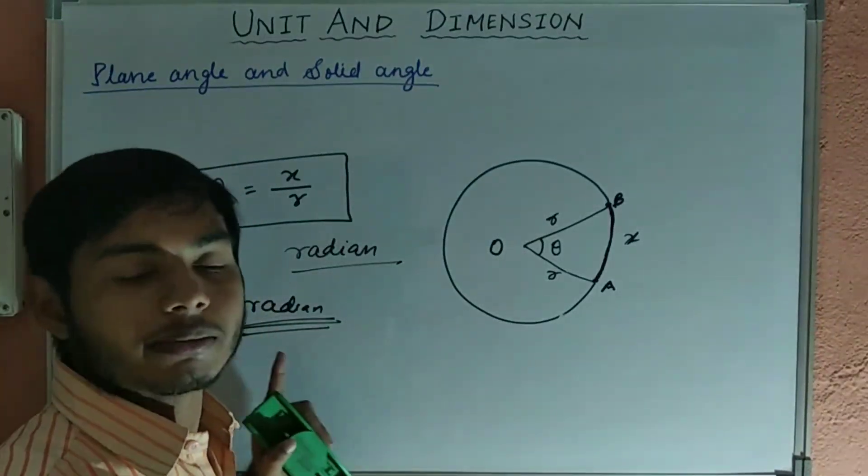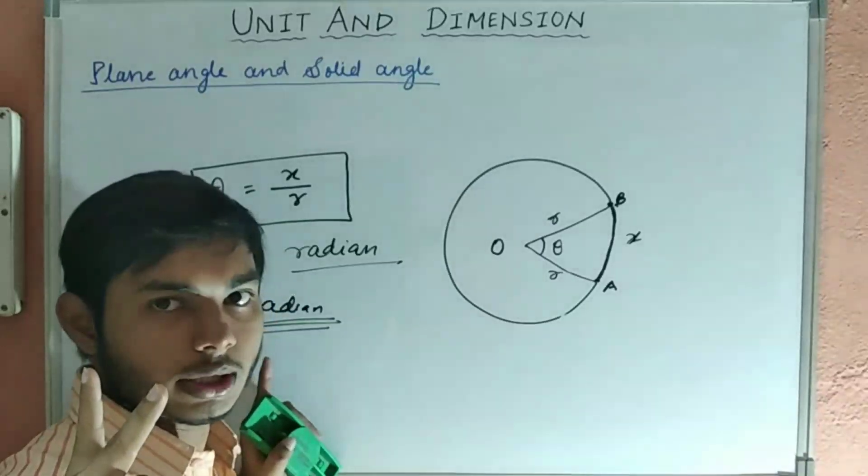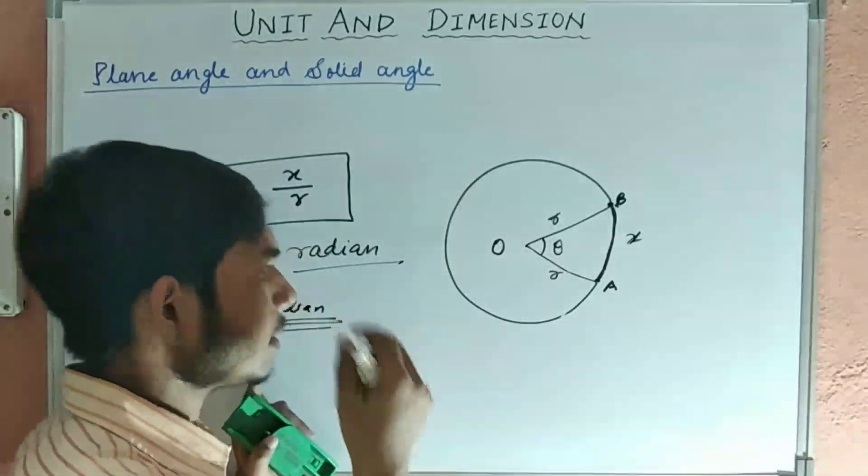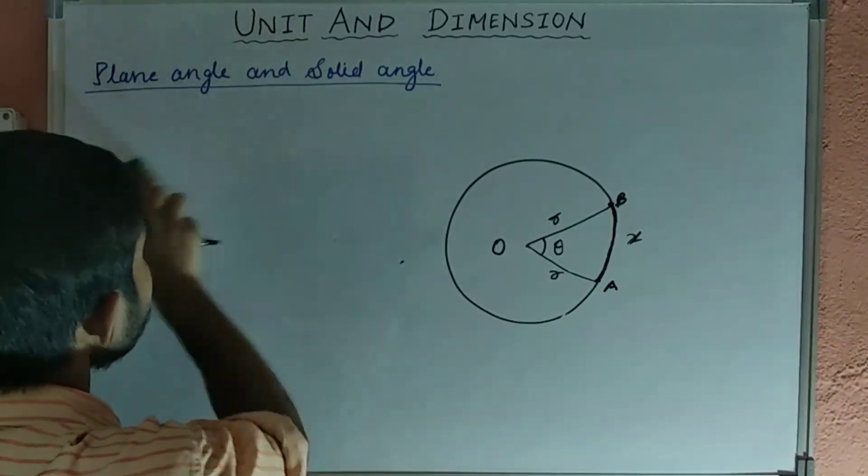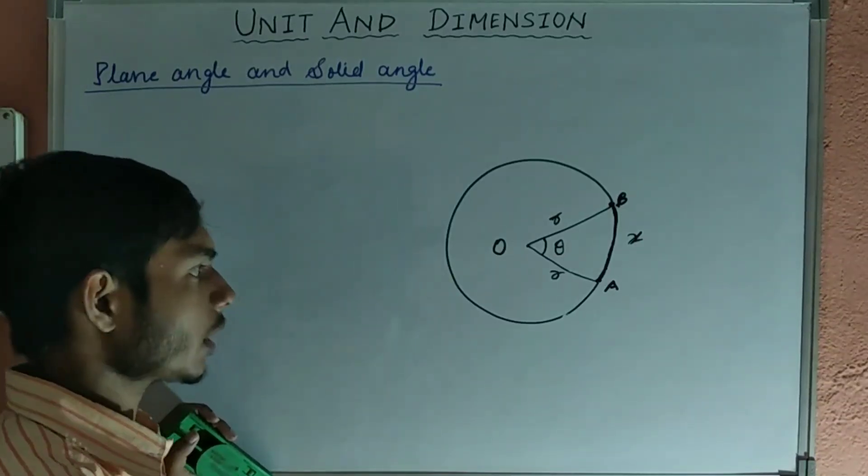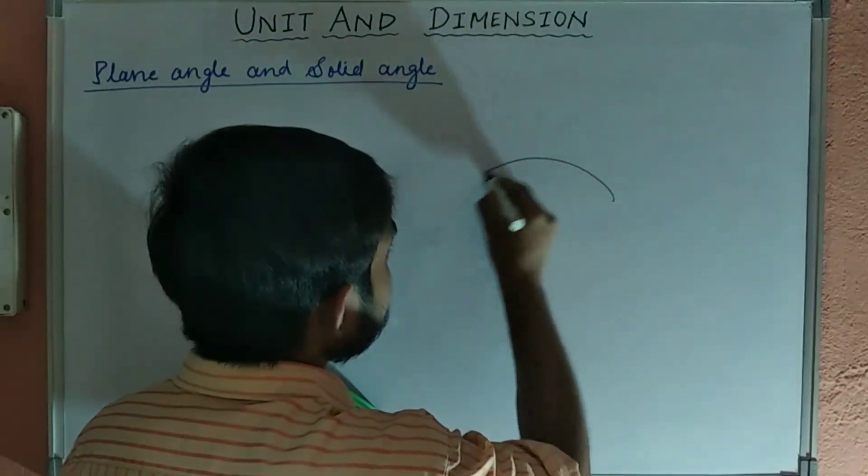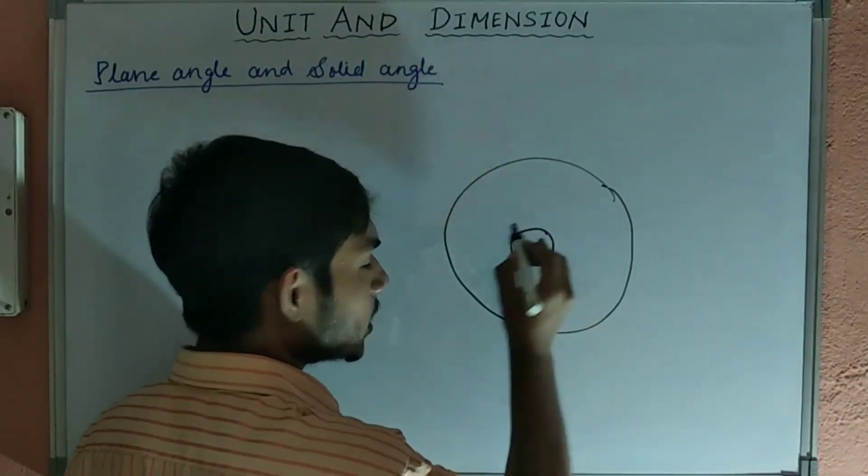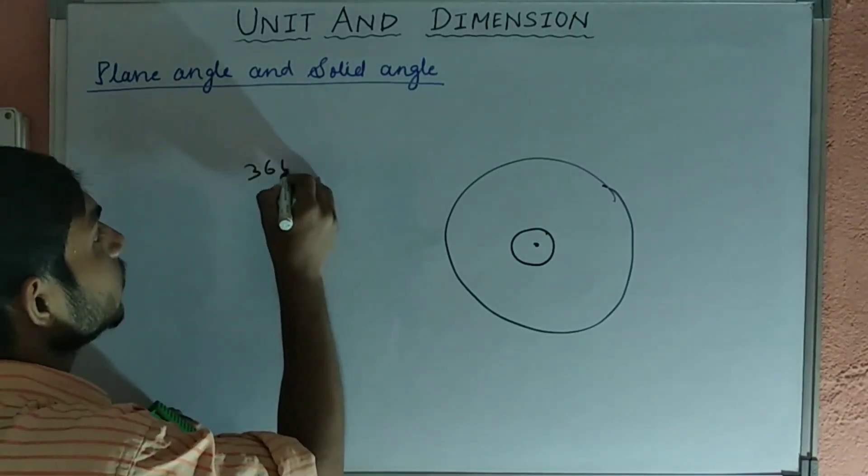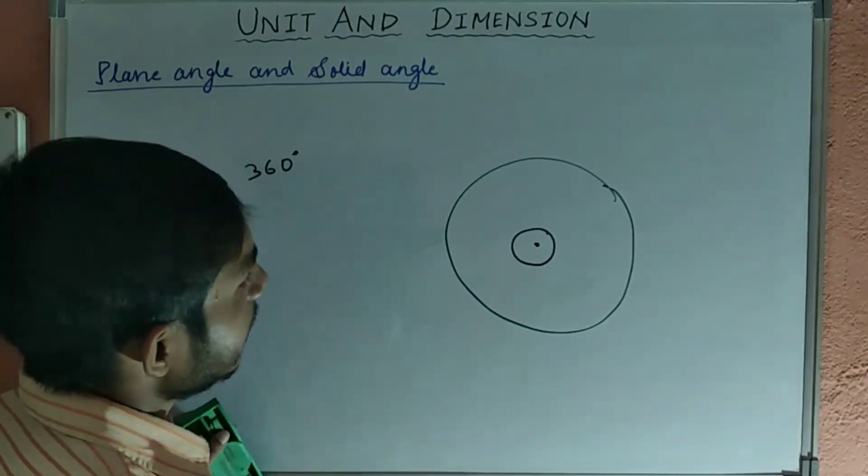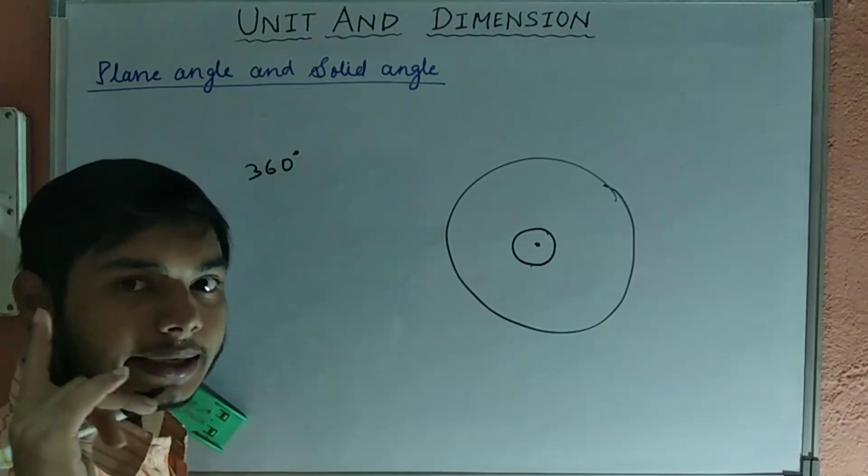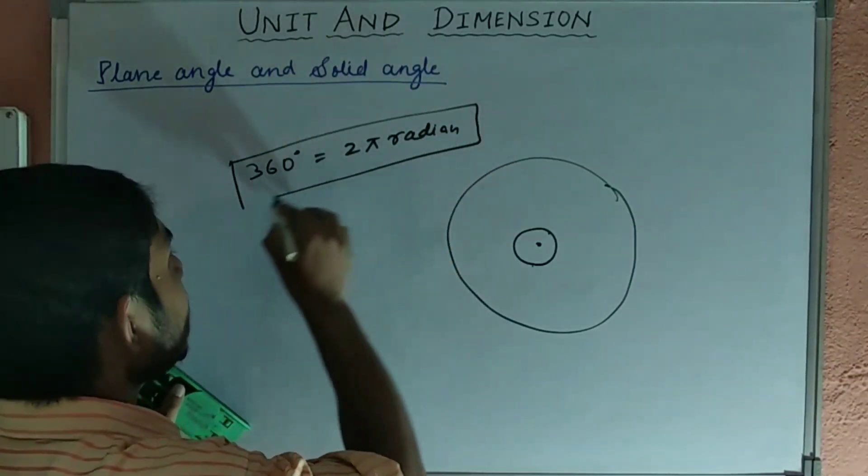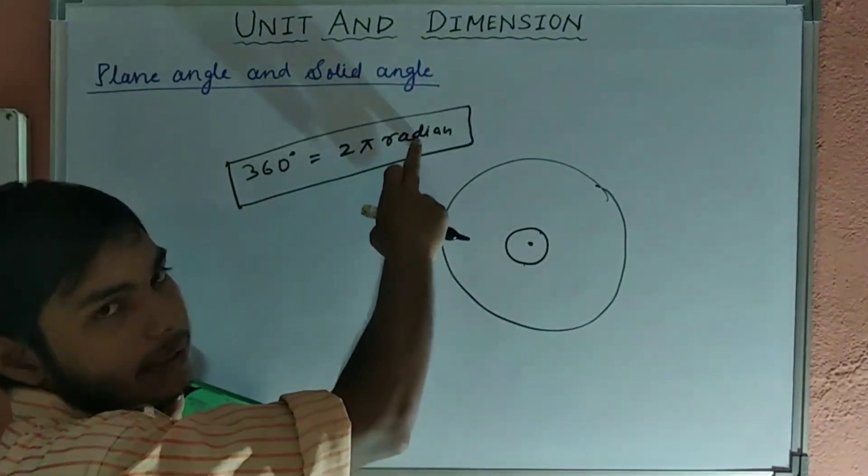Now see, angle we can measure in two ways. First one is radian and second one is degree. Therefore, there is a relation between these two, that is the radian and the degree. Let us suppose this is a circle. This is the center of the circle. This angle is how much? 360 degrees. Now, in radian, this is what? 2 pi radian. That means 360 degrees equal to we can say 2 pi radian. This is the main relation between the angle that is degree and radian.